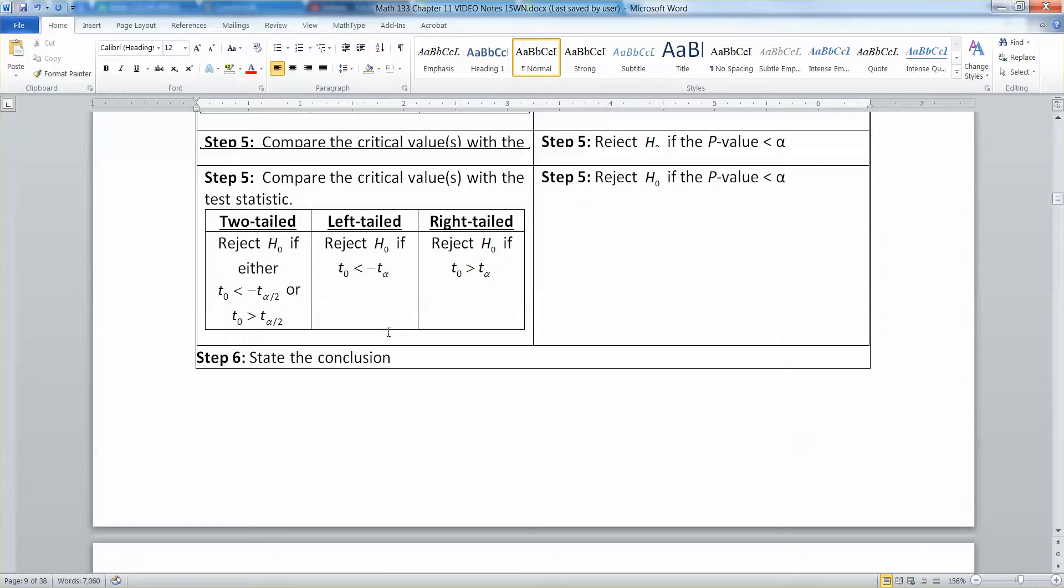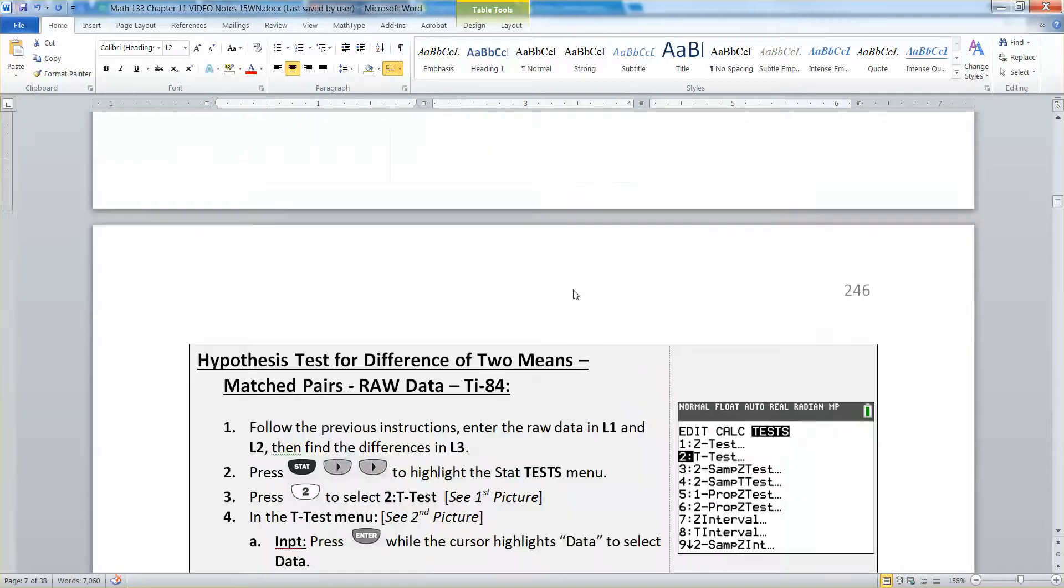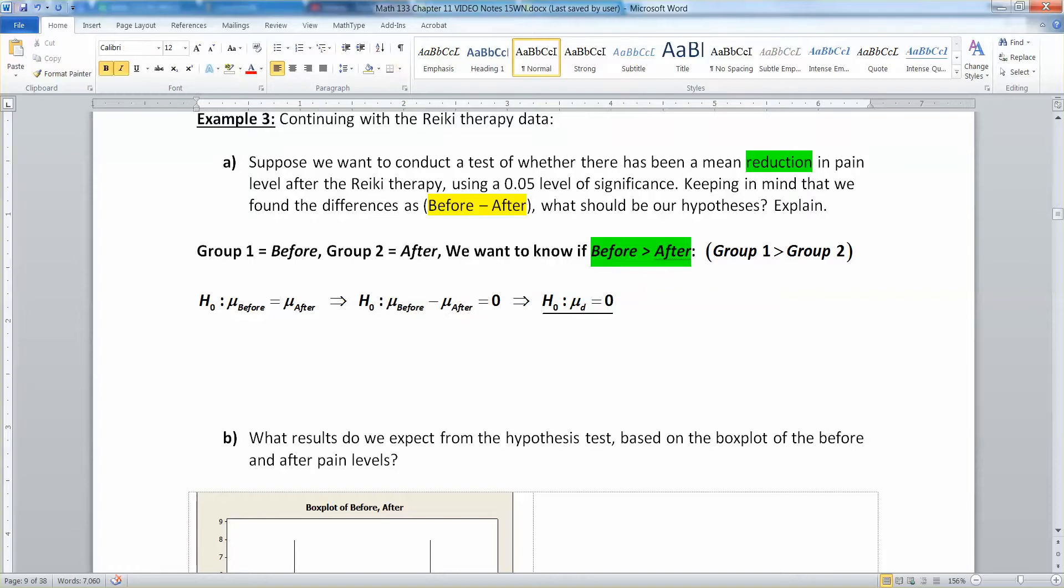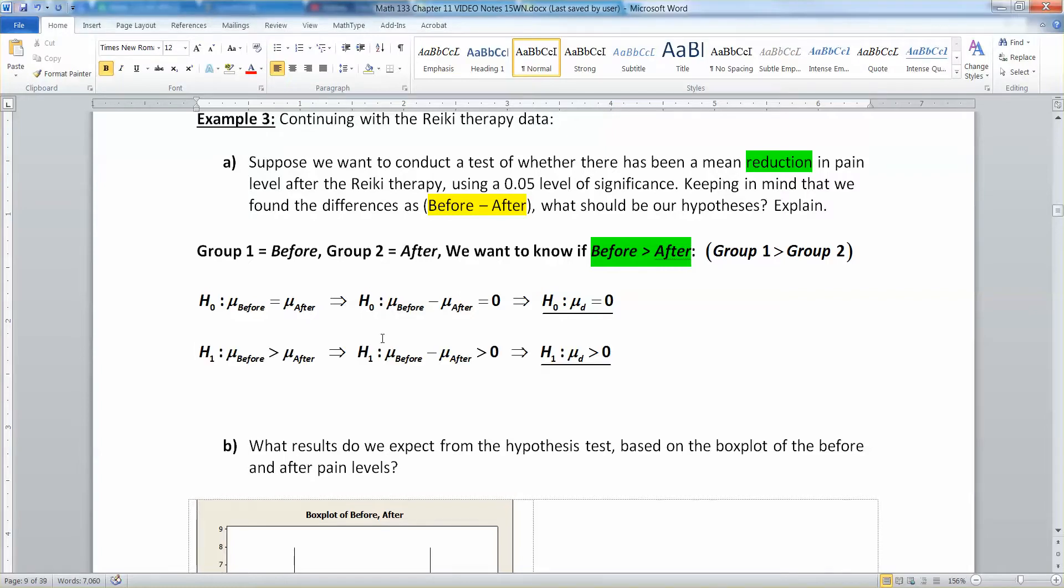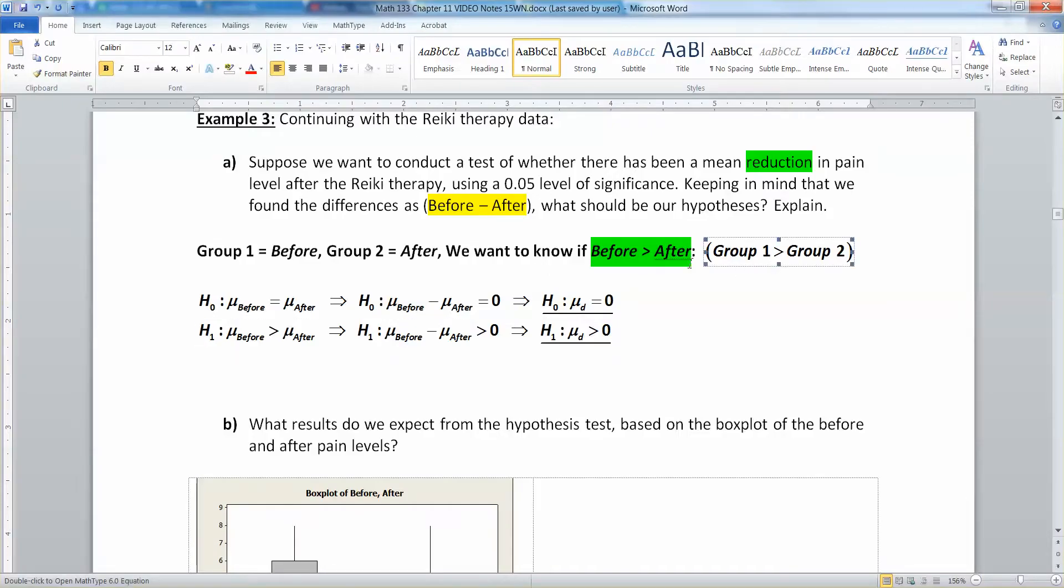If you look at these null hypotheses, every single one is mu_d equals zero. The hard part is the alternative hypothesis. You want before to be bigger than after. That means when you subtract them, before minus after is greater than zero. If before is bigger than after, then mu of before minus mu of after is greater than zero. In other words, mu_d is greater than zero.